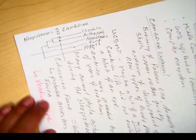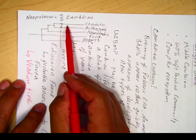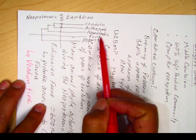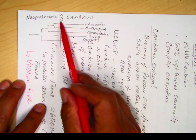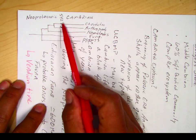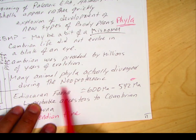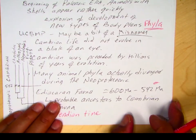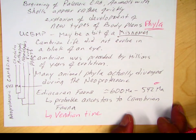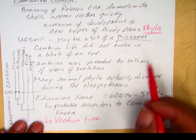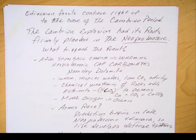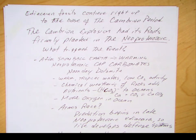If we look at the Neoproterozoic, many of the modern phyla we see today actually diversified before the pre-Cambrian/Cambrian boundary at 542 million years ago. Many animal phyla diverged during this Neoproterozoic time, meaning we had a long history of evolution before the Cambrian explosion — that's why the term may be a misnomer. These Ediacaran fossils, or Vendian fossils, continue right up to the base of the Cambrian period. The Cambrian explosion had its roots firmly planted in the Neoproterozoic.